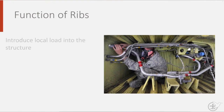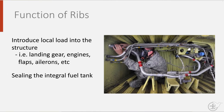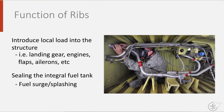Another important function of ribs is to introduce local load into the structure — for instance the landing gear, the engines, but also the flaps and the control surfaces such as the ailerons. Finally, ribs also have a sealing function in the case of an integral fuel tank. They prevent surge and splashing, because you can separate fuel tanks into individual bays.